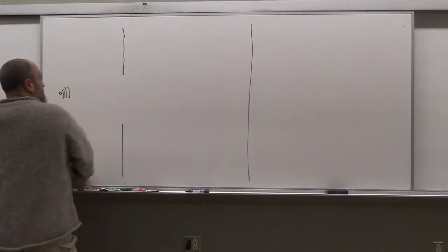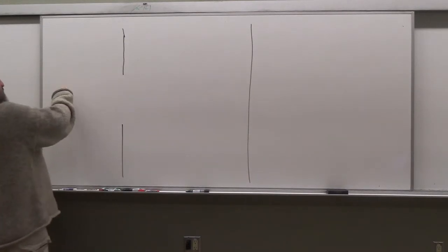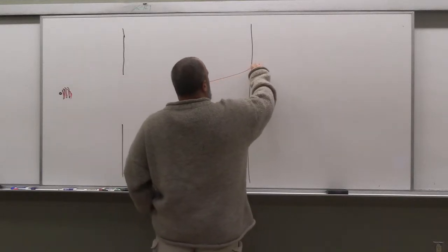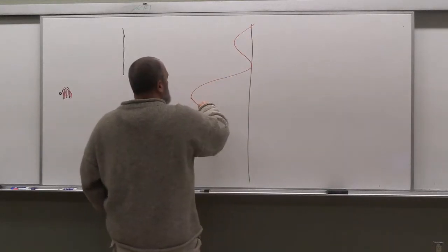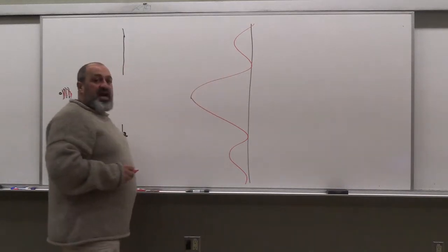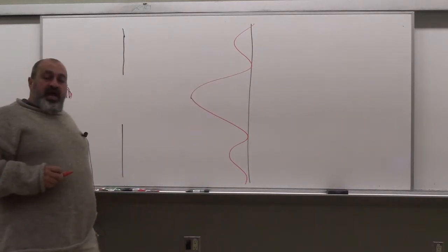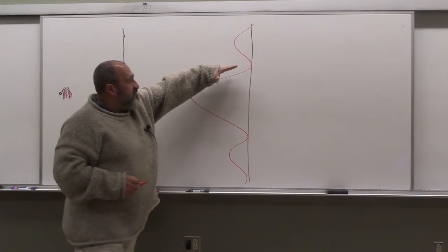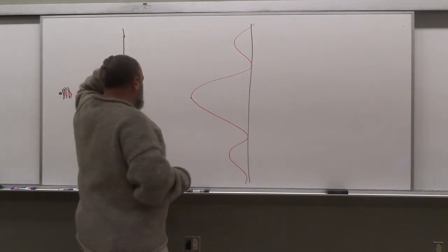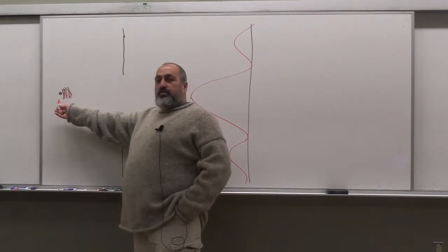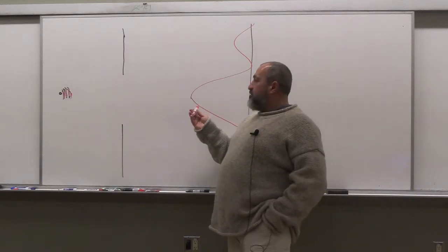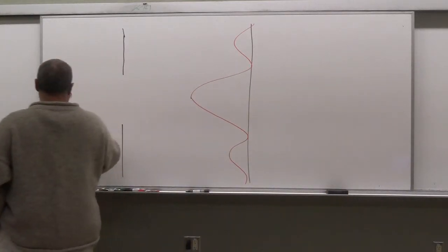That point source becomes a huge diffraction envelope in the retina and it occupies a lot of space. So this is your light source in red and you're going to have a diffraction envelope here. We talked about where the minima are going to be. These minima are located at sin theta equal to m lambda over a — lambda over a for the first minimum, 2 lambda over a for the second minimum, and so on. But the point is that each light source becomes a whole diffraction envelope.